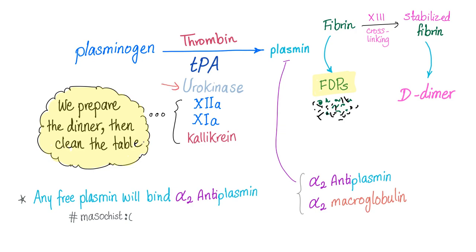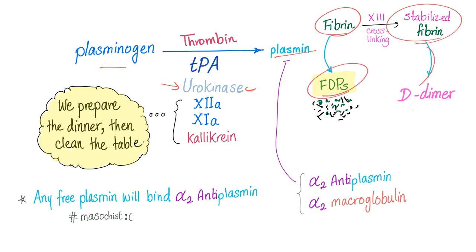Urokinase is here — it activates plasminogen into plasmin. Then plasmin will degrade fibrin to fibrin degradation products, and the cross-linked fibrin into the D-dimer.